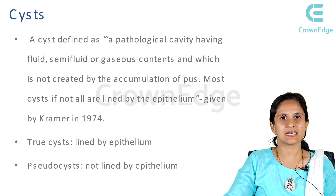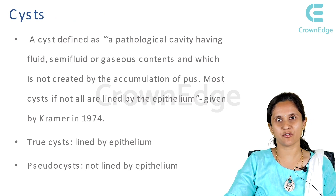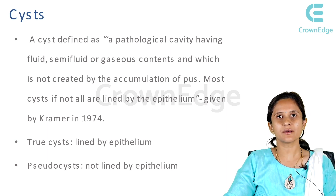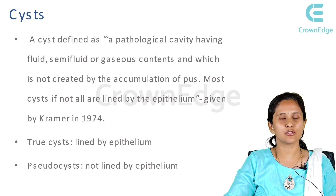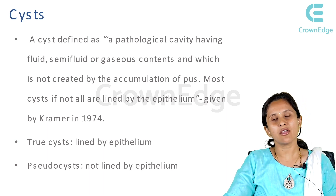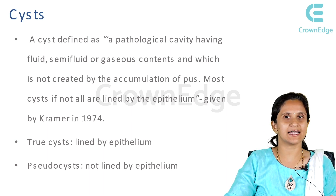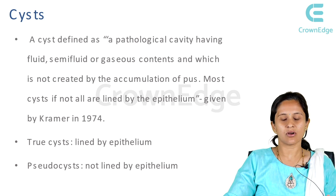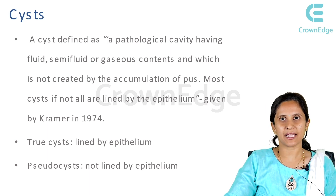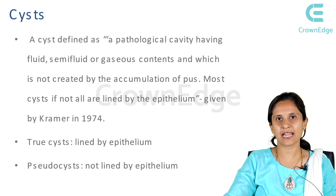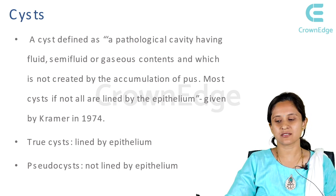What's a cyst basically? It's a pathological cavity which is not formed by the accumulation of pus. As we all know, if something gets accumulated with pus, it's called an abscess. This pathological cavity may or may not be lined by an epithelium. This definition was given by Kramer in 1974. If cysts are lined by epithelium, they are termed as true cysts; if not, they are termed as pseudocysts.